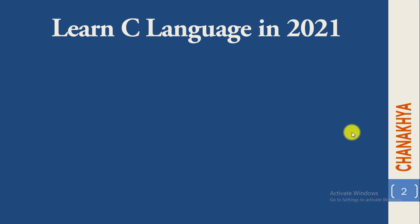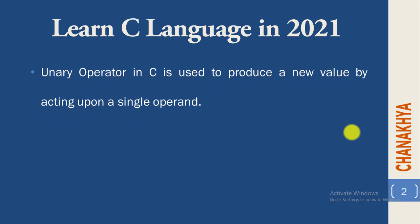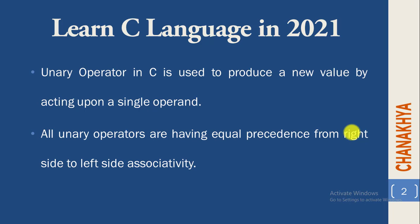Unary operators in C are used to produce a new value by acting upon a single operand. As we have done in the previous video on arithmetic operators, we need at least two operands to produce a new result. Whereas unary operators produce a new value by acting upon a single operand. All unary operators have equal precedence with right-to-left associativity.